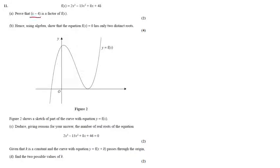OK, so for question 11, we need to prove that x minus 4 is a factor of f of x. Now, if x minus 4 is a factor, then it is true that f of 4 will be 0. So we are going to work out f of 4.